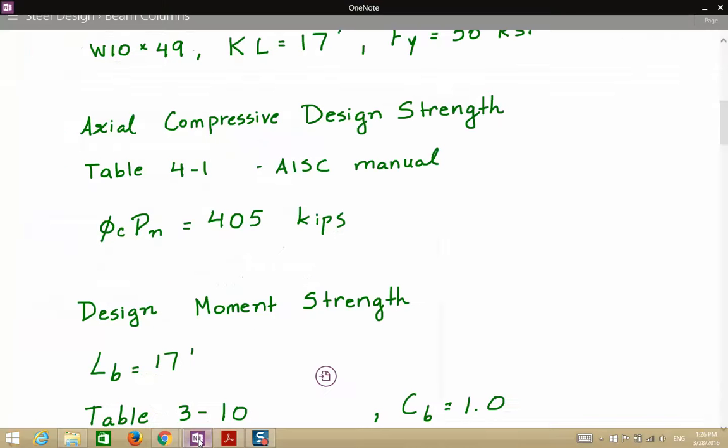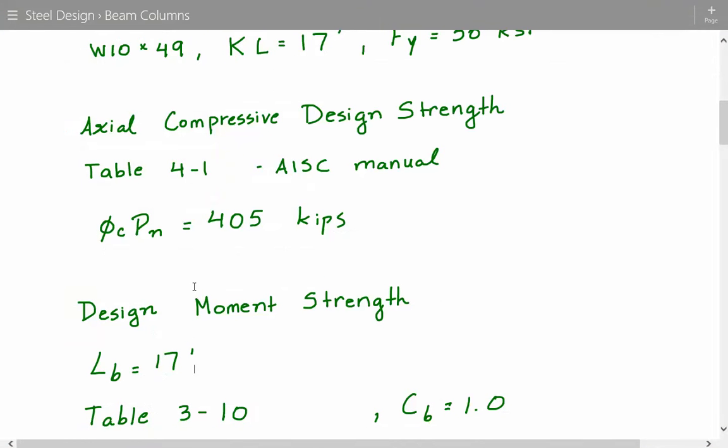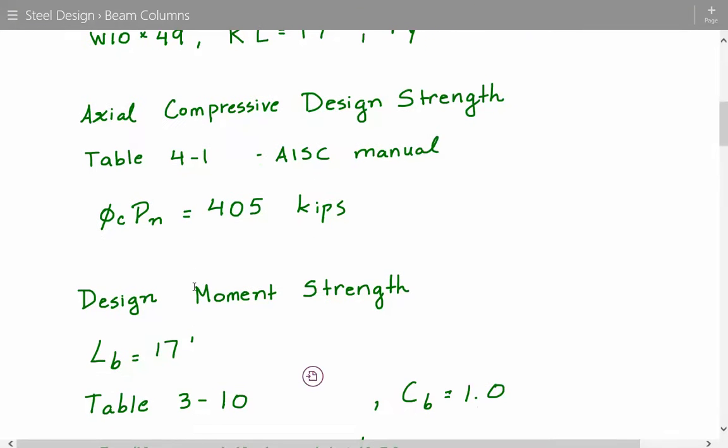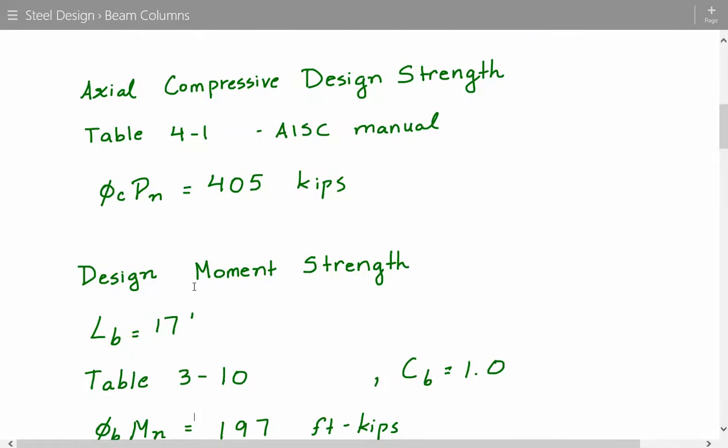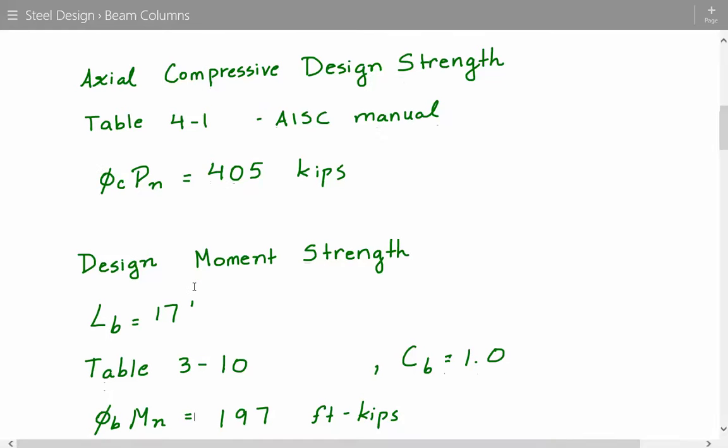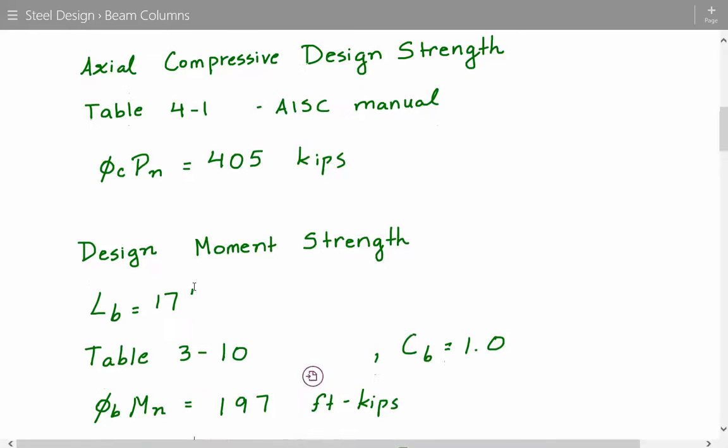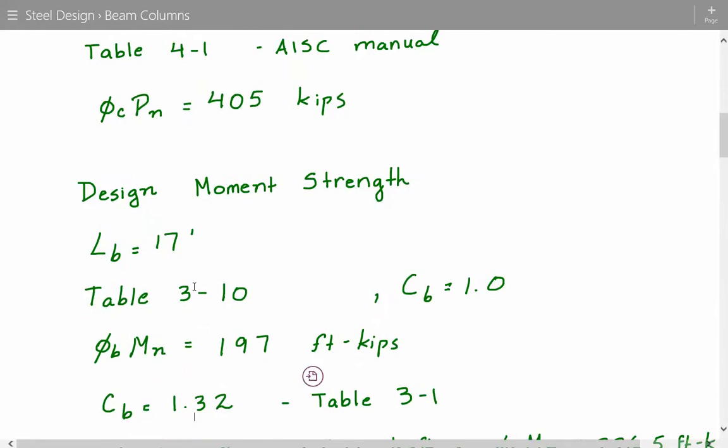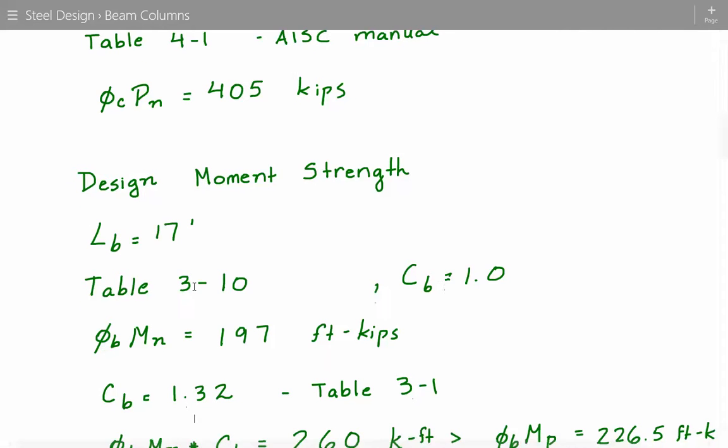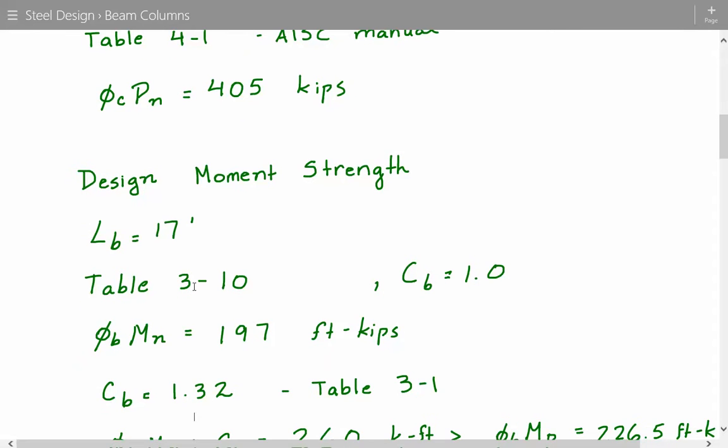So we go back to our problem statement. Table 3-10 assumes that the lateral torsional buckling modification factor Cb is 1.0. But in our case, based on table 3-1 in the manual, based on the loading conditions that we have, it's actually 1.32.